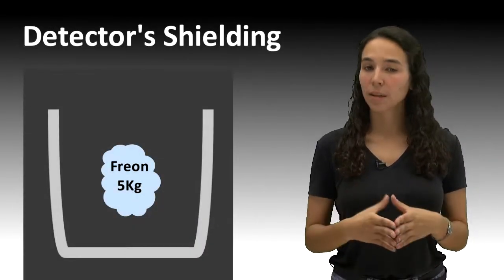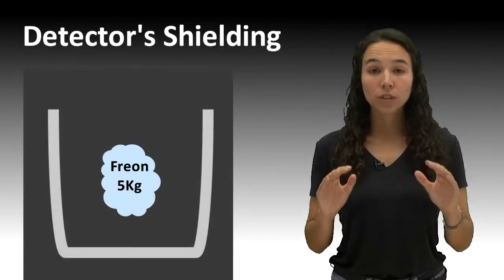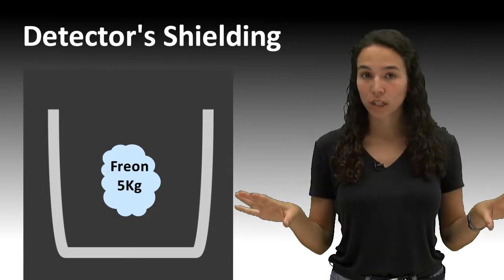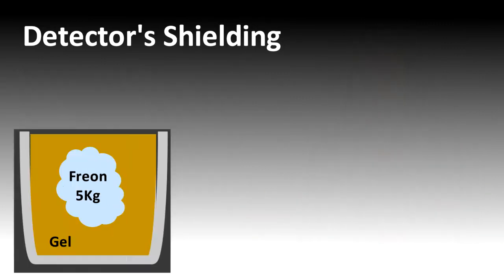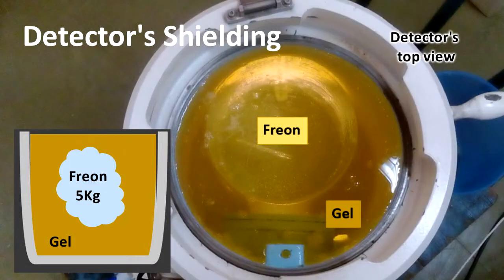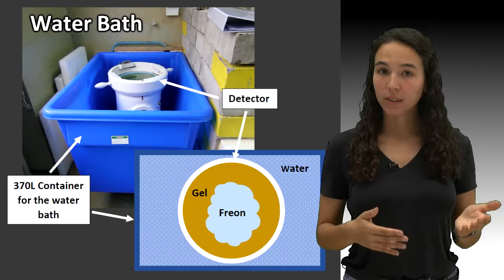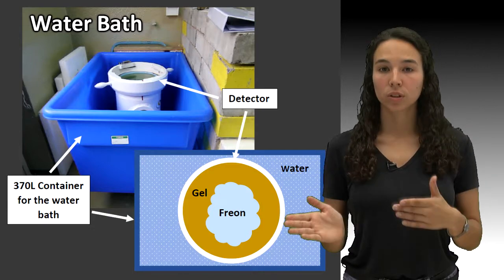Since freon is in a very unstable state, it has to be shielded from all sorts of unwanted nucleations. This is why a layer of gel is placed around the active mass. To control the temperature at which we operate, the detector is placed inside a water bath.